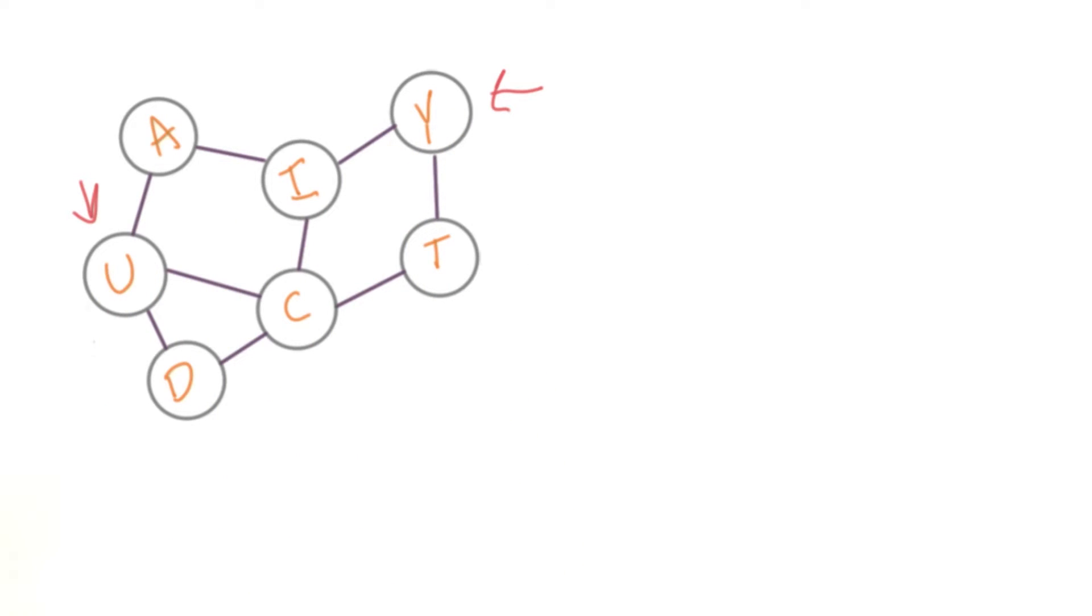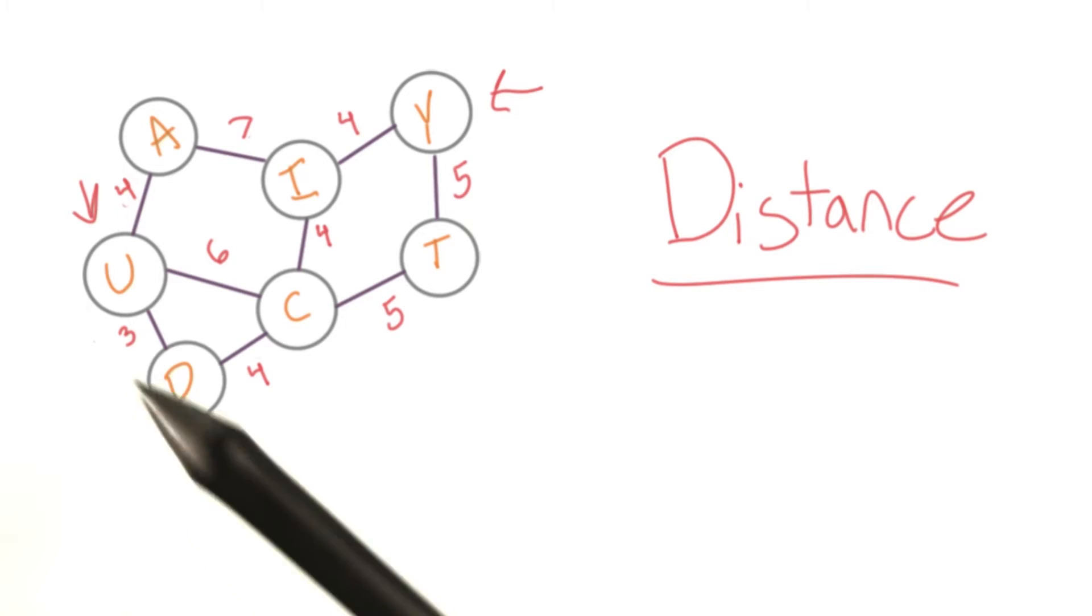We begin by giving all vertices a distance value. A distance is the sum of edge weights on a path between our starting point and whatever vertex we're on. At the end of the algorithm, this distance will be the distance of the shortest path.